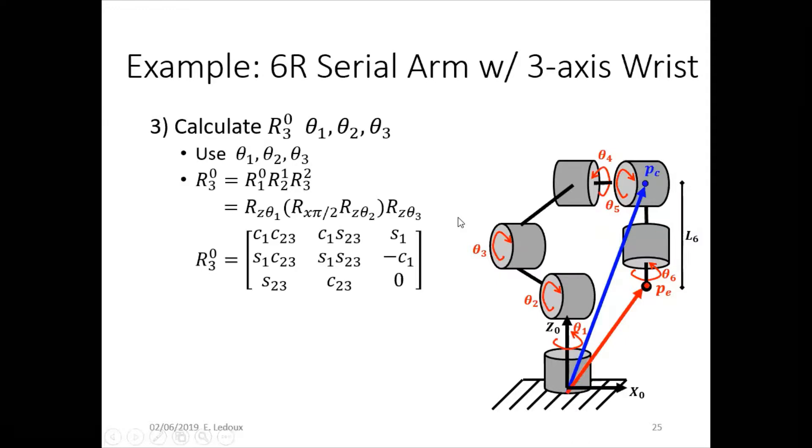Then calculate the rotation matrix from theta 1, 2, and 3. So this is just the rotation from frame 0 to frame 1, 1 to frame 2, 2 to frame 3. Since it's current frame, we post-multiply. And then you put those, multiply out those all together and get this final matrix.